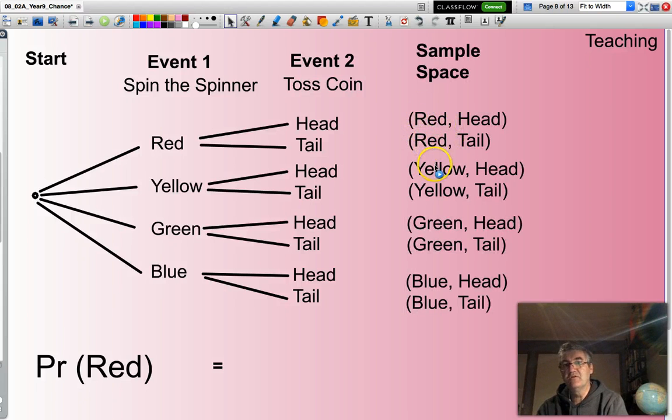And of all these eight outcomes, how many of those are just red? I'm not interested in the head or the tail anymore, just the colour red.